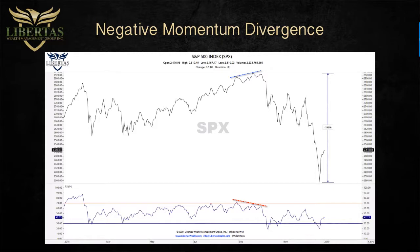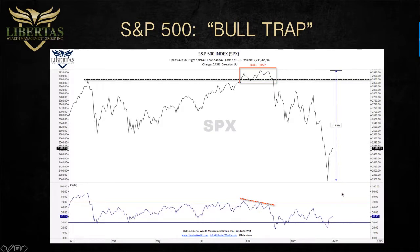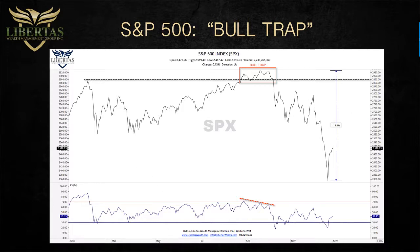Just one red flag isn't anything to run from. The second red flag, however, was a bull trap — when the market goes above a line in the sand, doesn't stay above it, and comes back. So it's a failed breakout. The market breaks out to the topside, but then fails and comes back down. That's a bull trap, which makes sense because price has a tendency to follow momentum, and momentum was already diverging southward, so the market headed downward.